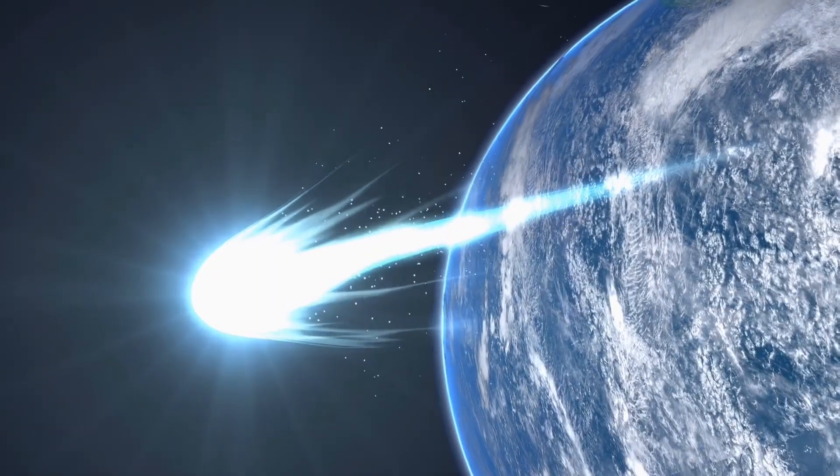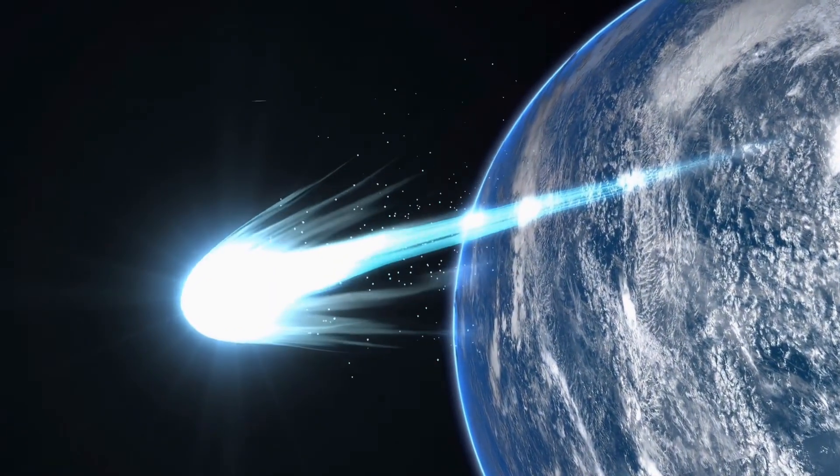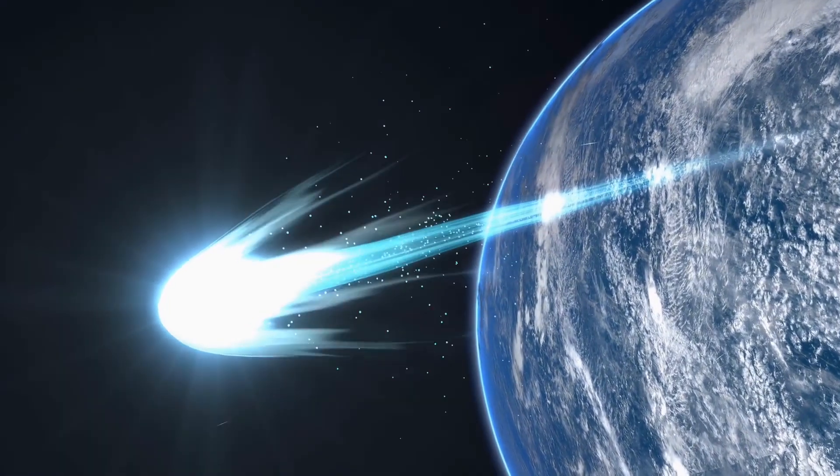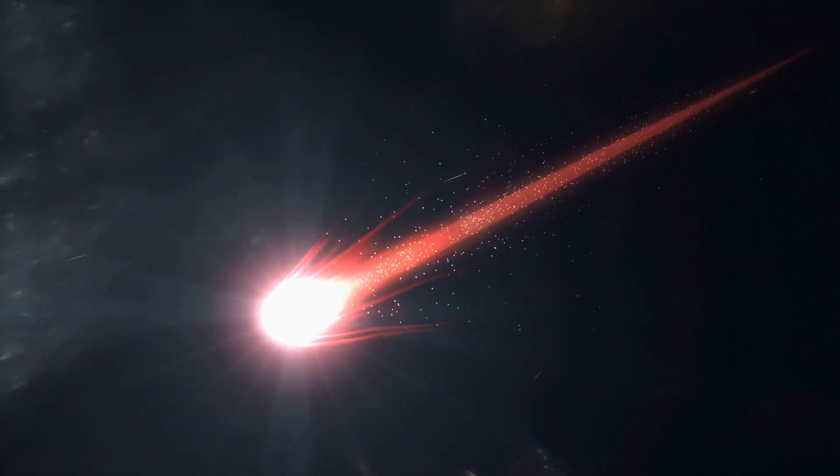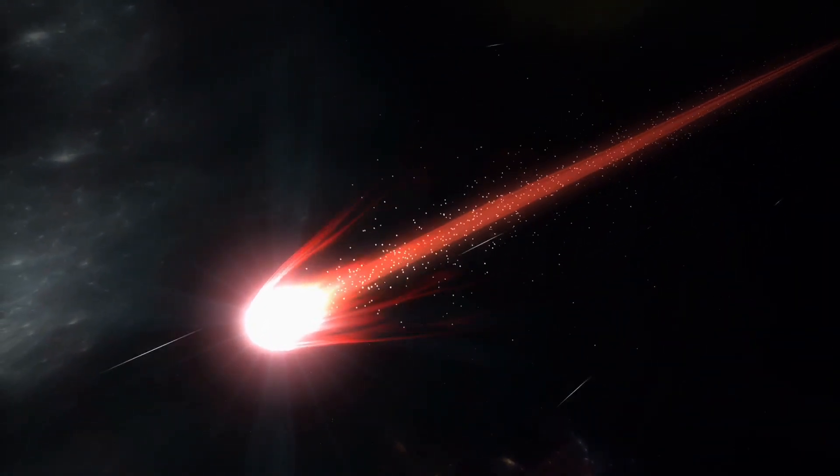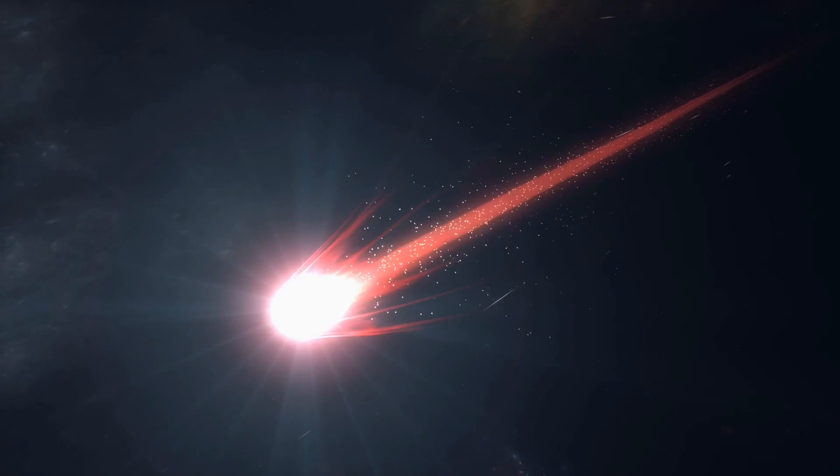Comets are icy bodies that orbit the sun. They are made up of a mixture of rock, dust, ice, and organic compounds. When a comet gets close to the sun, the heat causes the ice to vaporize, creating a glowing coma, a cloud of gas and dust, and a tail that can be seen from Earth.